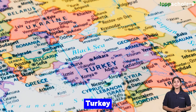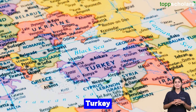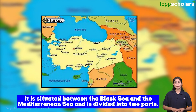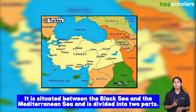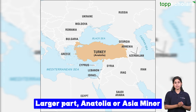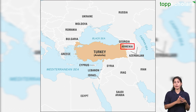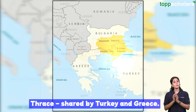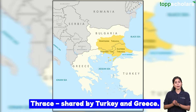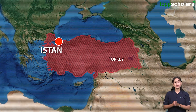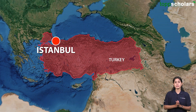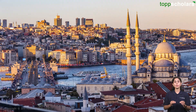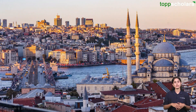The next contiguous transcontinental country is Turkey. It is situated between the Black Sea and the Mediterranean Sea and is divided into two parts. The larger part, Anatolia or Asia Minor, is bordered by Armenia, Georgia, Iran, Syria, and Iraq. The smaller part, Thrace, is shared by Turkey and Greece. Istanbul is Turkey's largest city and is the most populous city in Europe, despite its Asian territory.